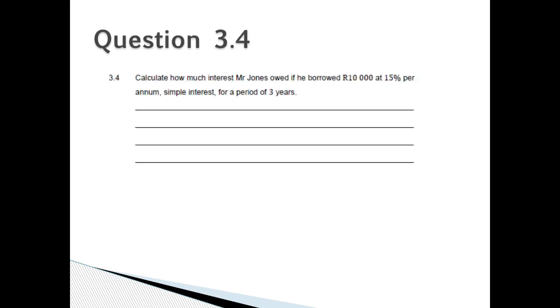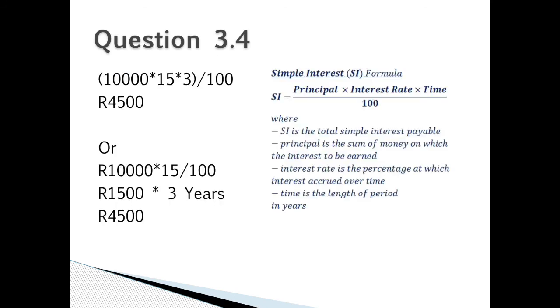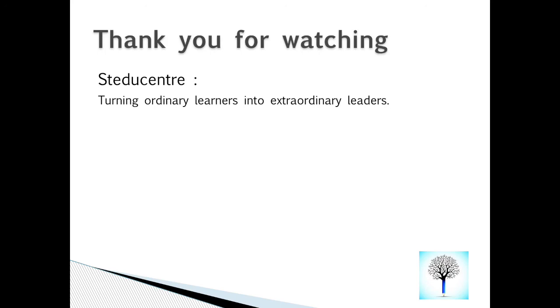Question 3.4: Calculate how much interest Mr. Jones owed if you borrowed 10,000 at 15% per annum simple interest for a period of 3 years. Question 3.4: Simple interest formula. So your SI, which is your simple interest, is equal to your principal times interest rate times time over 100. Where SI is the total simple interest payable, your principal is the sum of money on which the interest is to be earned, interest is the percentage at which interest occurred over time, time is the length of period in years. So your answer for 3.4 is 10,000 times 15 times 3 divided by 100 is equal to 4,500. Thank you for watching Study Centre: Turning Ordinary Learners Into Extraordinary Leaders.